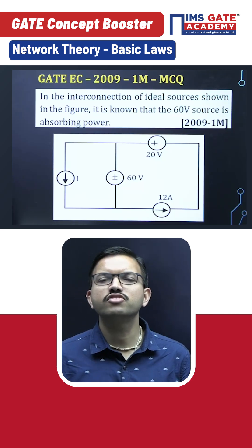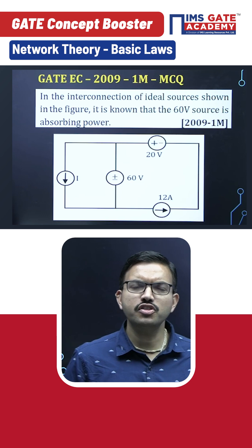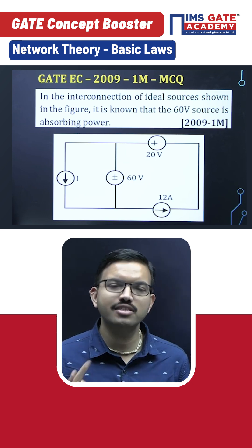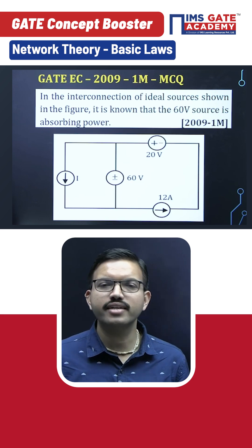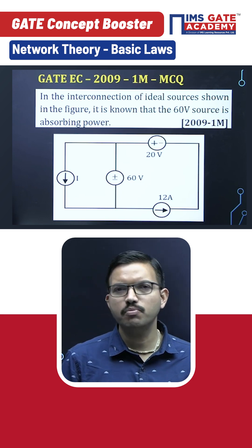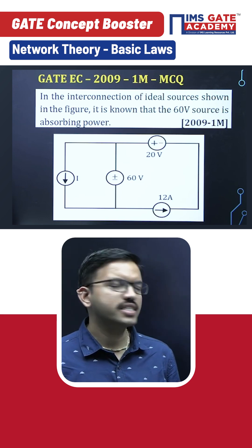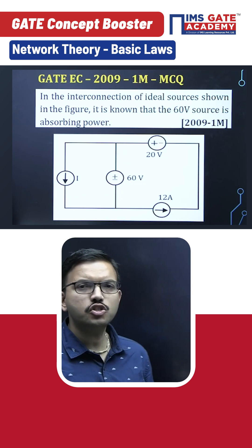This is a very interesting GATE question asked in EC 2009 for one mark. In this particular circuit, if you observe, four elements are there—all ideal sources. Among them, two are voltage sources and two are current sources. In this question they have mentioned that the 60 volt source is absorbing power. In order to determine the current source value i, you have four choices to verify option by option.